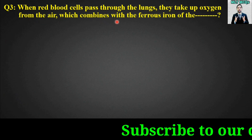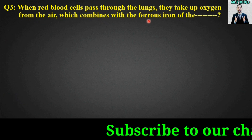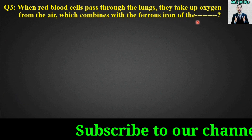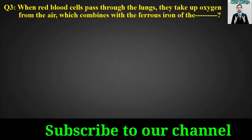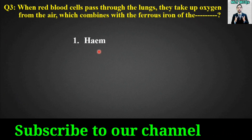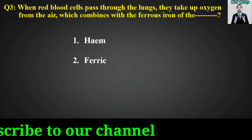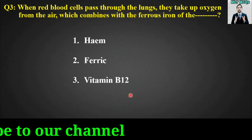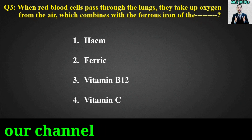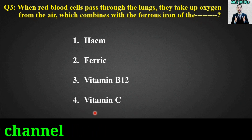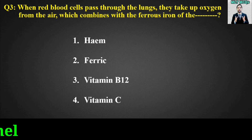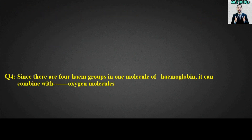MCQ number three: When red blood cells pass through the lungs, they take up oxygen from the air, which combines with the ferrous iron of the blank. Options are: heme, ferric, vitamin B12, or vitamin C. The right answer is option number one — heme.